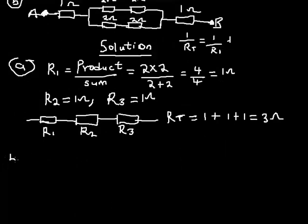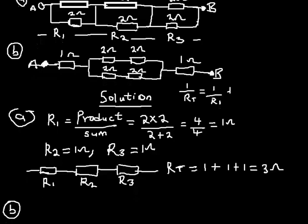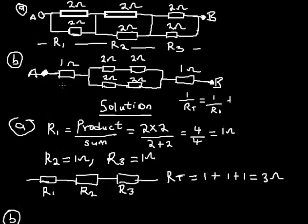Now let's look at part B of the question. As you can see, there's a branch. As the current goes through this first resistor, it then branches into two paths. In each of those two branches there are two resistors in series — two ohms and two ohms in series in the first branch, and two ohms and two ohms in series in the second branch.